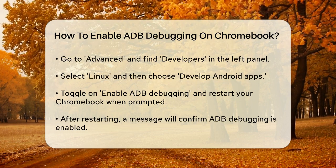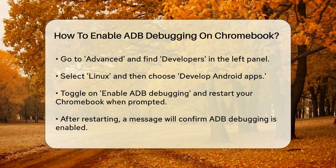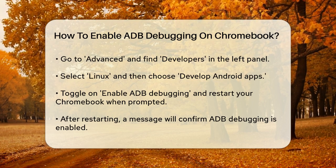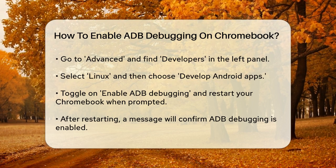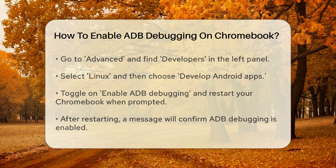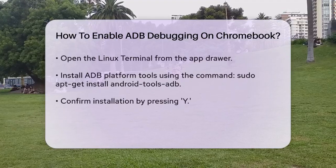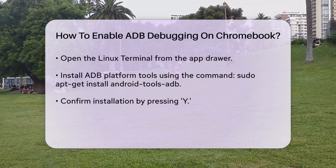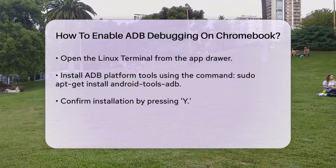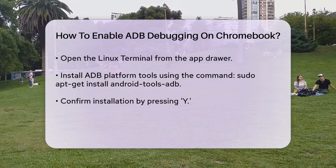Here's where the magic happens. Toggle on Enable ADB Debugging. Your Chromebook will prompt you to restart, so go ahead and do that. Once it restarts, you'll see a message about ADB debugging being enabled.